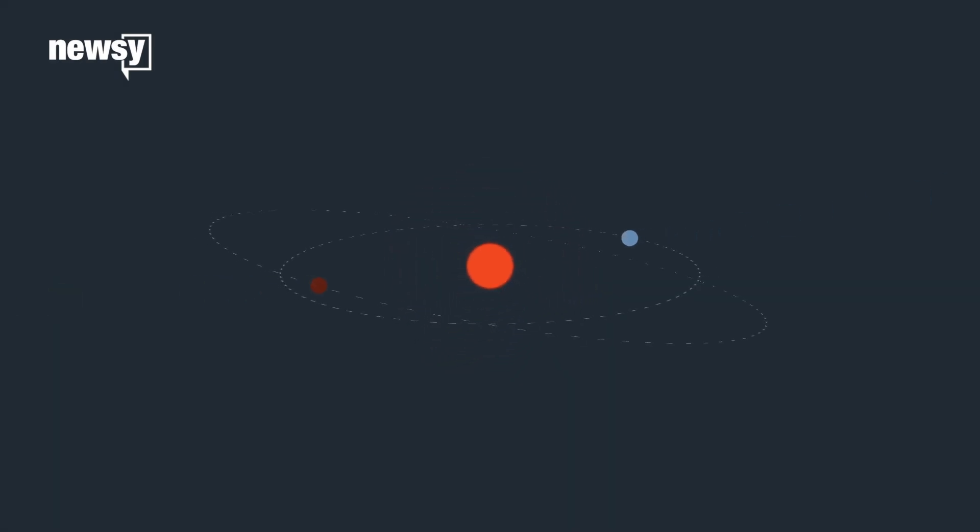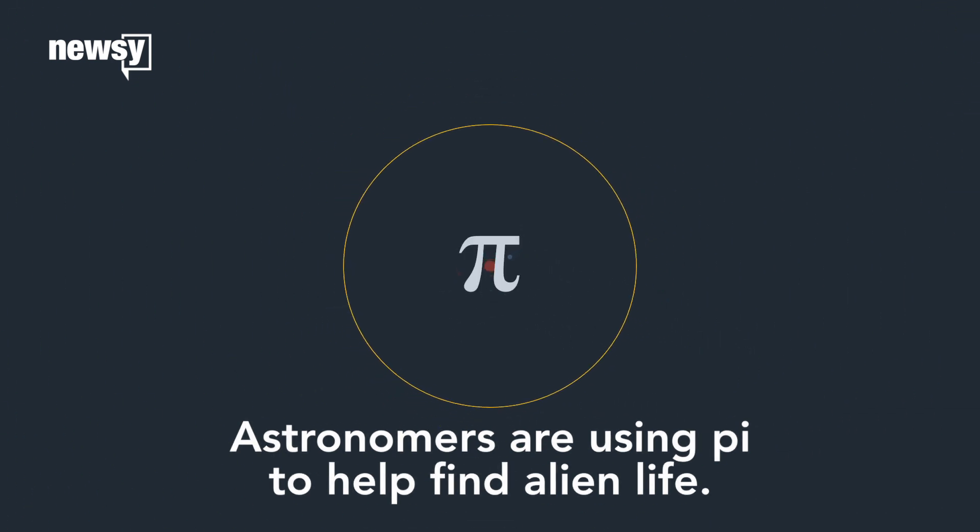To help find habitable planets and alien life in our universe, astronomers are using a fundamental mathematical idea — pi.